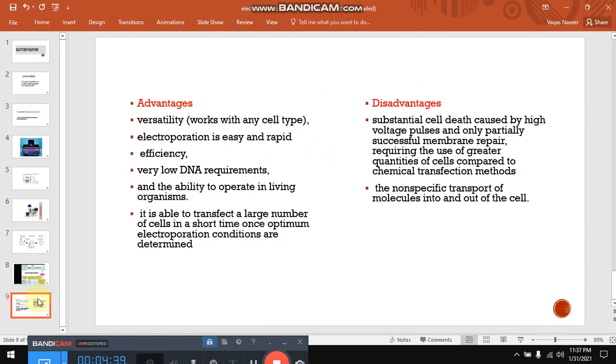Friends, there are certain advantages and disadvantages of this method. What are advantages? It can be applied with any type of cell, so it is versatile. Friends, it is rapid and very easy. It is a very high efficient process. And a very low amount of DNA is required. And through this method, we will be able to operate in living organisms. Friends, it is able to transfect a large number of cells in a very short period of time when optimum electroporation conditions are determined.